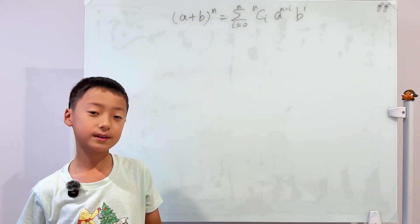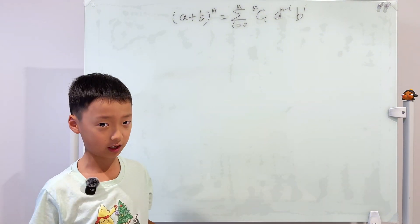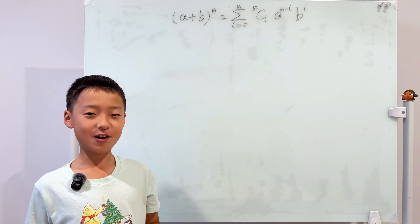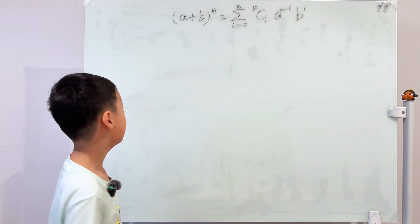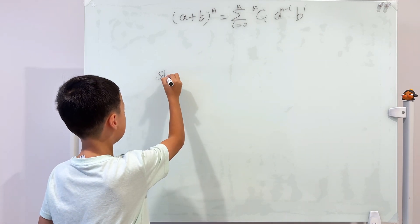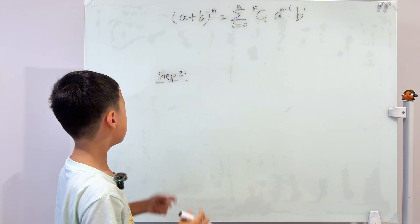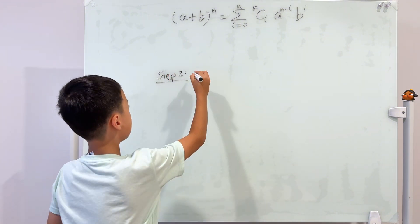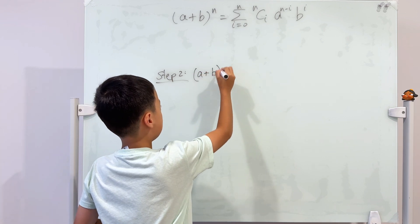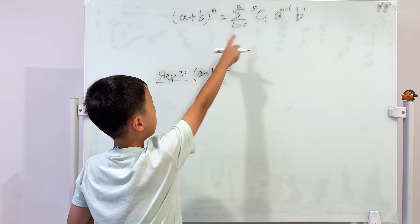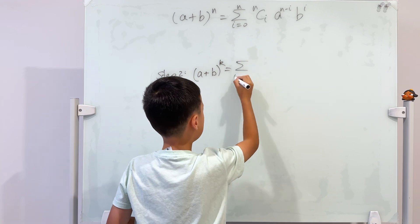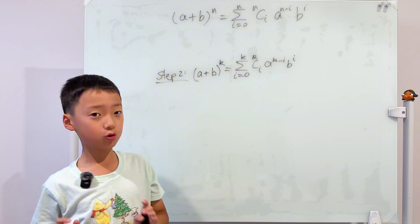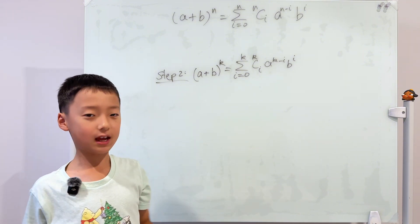I will skip step one of mathematical induction because it will obviously be true. You guys can try that yourselves. So now I'll just skip right to step two. Step two is to assume it's true when n equals k. So then we can just plug it in, just change all of the n's into k's.